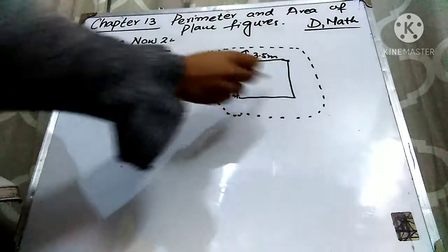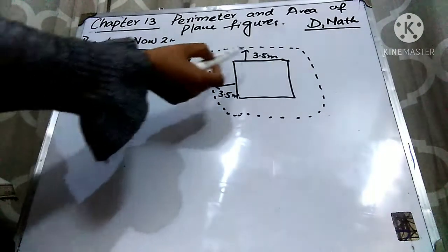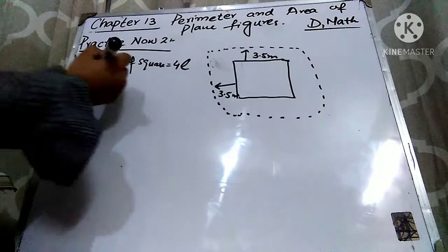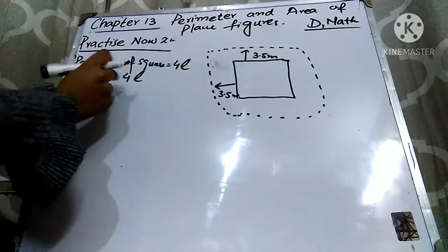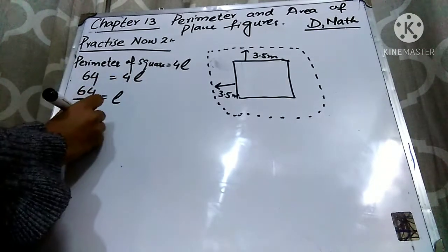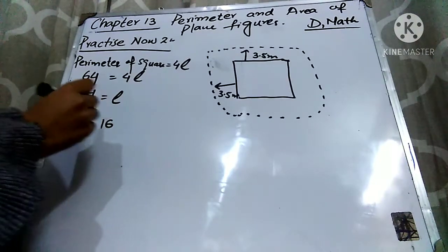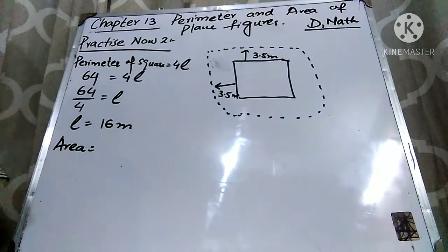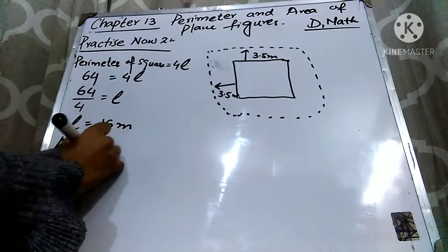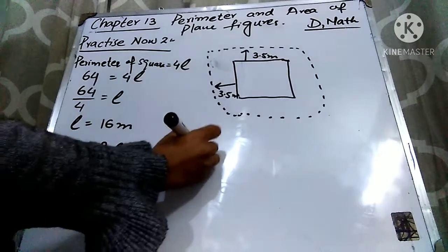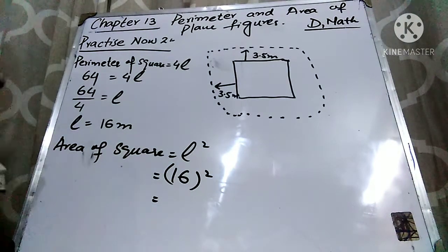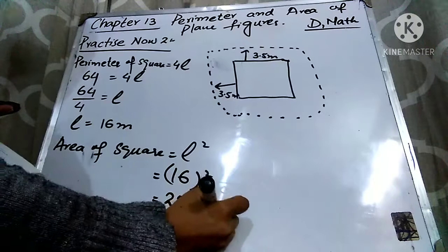The perimeter is the sum of the lengths of the outer boundary. There are four sides, all equal, so the perimeter equals 4L. We are given perimeter = 64, so 64 = 4L, which gives L = 16 meters. Now we can find the area of the square field. The formula is area = L², so area = 16² = 256 meters square. That is the area of the square field.